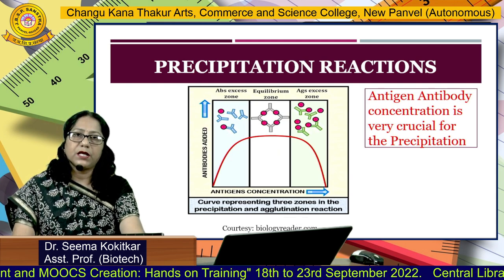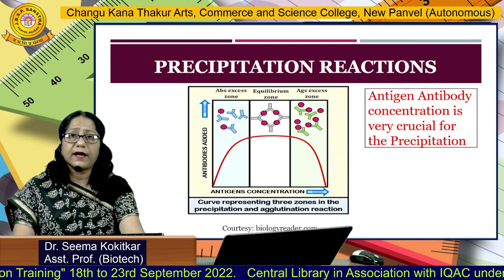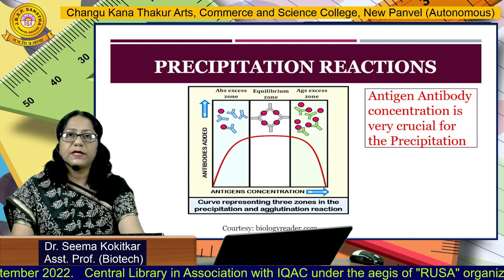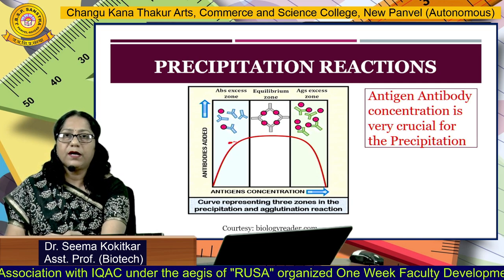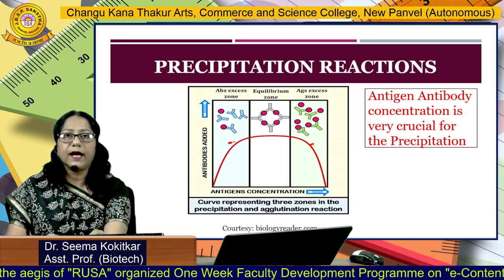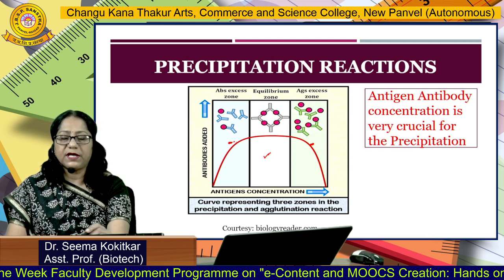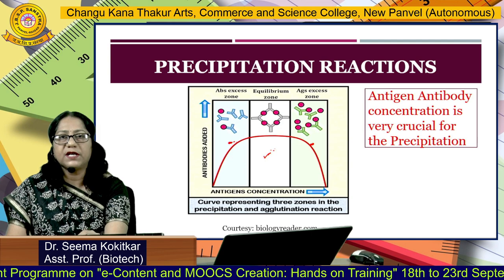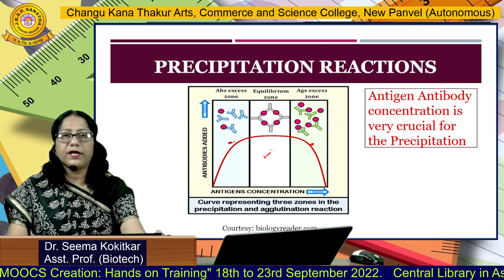What are the basic requirements for a precipitation reaction to occur? Antigen-antibody concentration is a very crucial factor when we talk about precipitation. If you look at this graph, you can see that there are three zones: there is a zone of antibody excess, there is a zone of antigen excess, and in between you can see a zone that is the zone of equimolar concentration. The peak of the graph falls here, indicating that maximum precipitation is observed in this zone. So we need an equimolar concentration of antigen and antibody for our reaction.